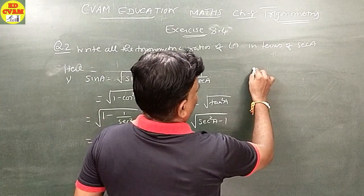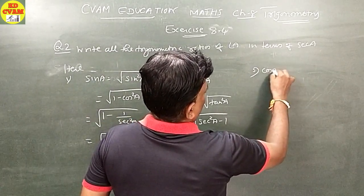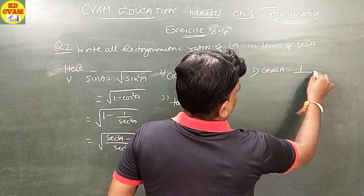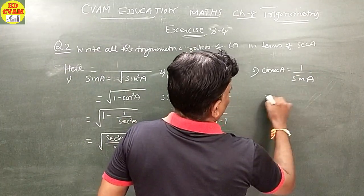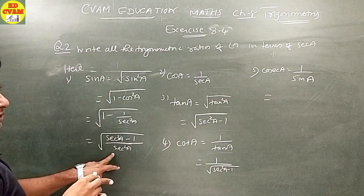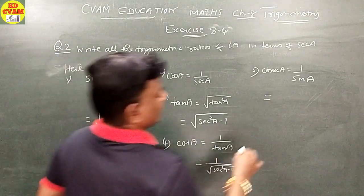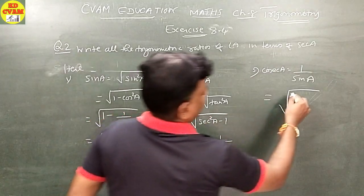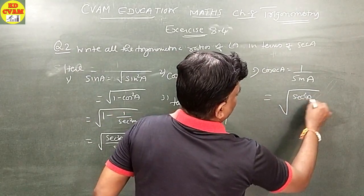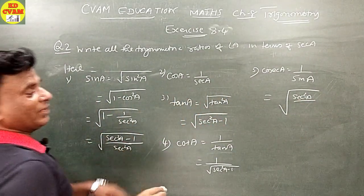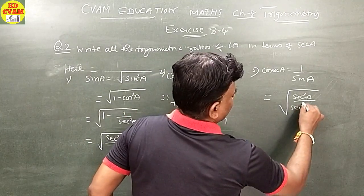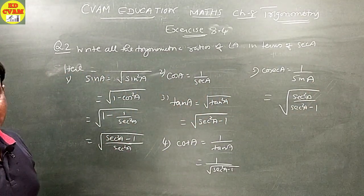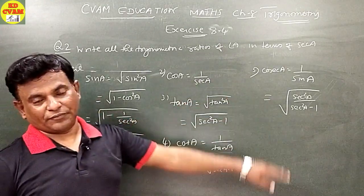Now the last one — cosec A. Cosec A equals one upon sin A. Since we already proved sin A, cosec A equals sec A on top and square root of sec squared A minus 1 on the bottom. You can also write it the other way: sec A upon square root of sec squared A minus 1. Both forms are correct.